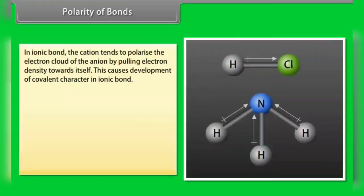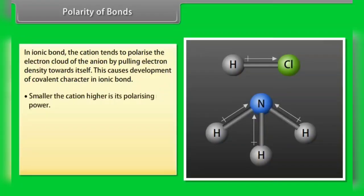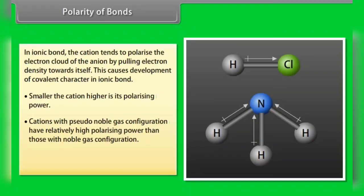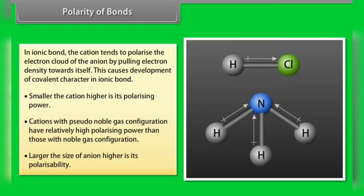In ionic bond, the cation tends to polarize the electron cloud of the anion by pulling electron density towards itself, causing development of covalent character in the ionic bond. Smaller the cation, higher is its polarizing power. Cations with pseudo-noble gas configuration have relatively higher polarizing power than those with noble gas configuration. Larger the size of the anion, higher is its polarizability.